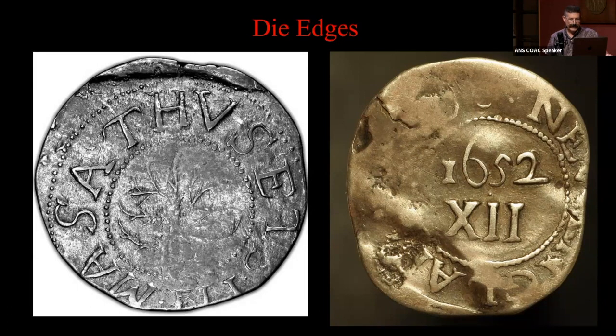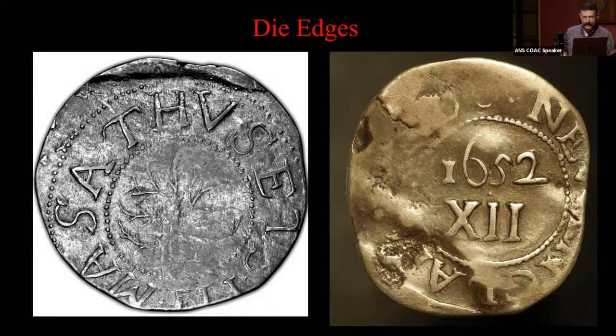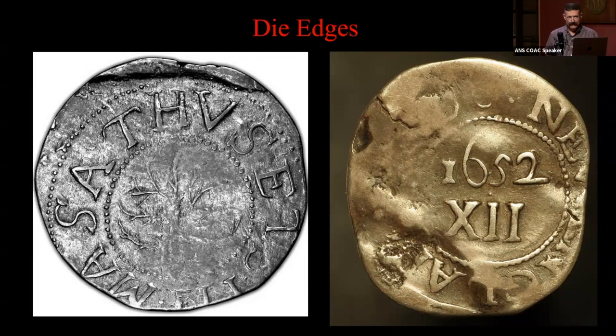That die went through so many reworkings that it just doesn't make sense, metallurgically speaking, to have to anneal and reharden the surface of that die every single time you wanted to touch up a detail. I can tell you, having worked quite a bit with iron and steel, you can't do it because the heat necessary to do this is going to cause spalling, loss of detail. It doesn't make sense.